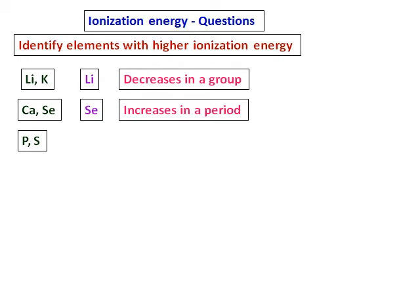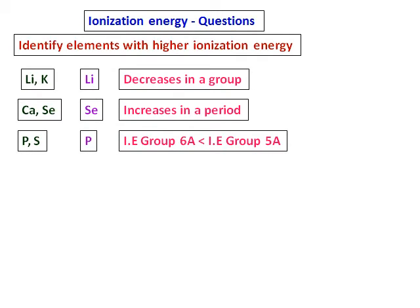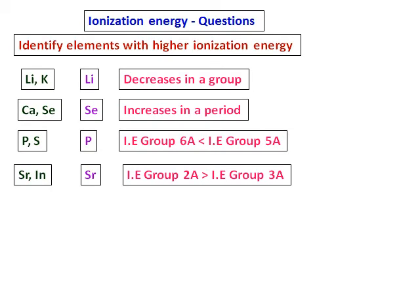Phosphorus vs. sulfur: these two belong to the same period, but phosphorus belongs to group 5A and sulfur belongs to group 6A. We have learned that the ionization energy of group 6A is lower than that of group 5A, so phosphorus has higher ionization energy. For strontium vs. indium, the answer is strontium, as the ionization energy of group 2A is greater than that of group 3A.